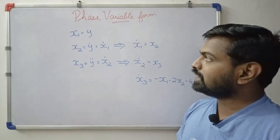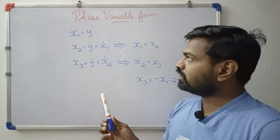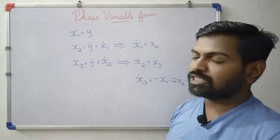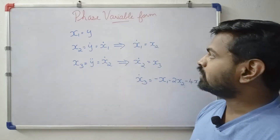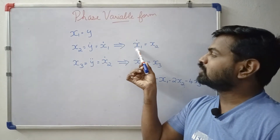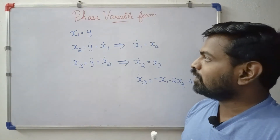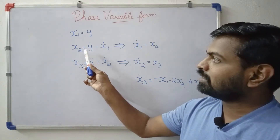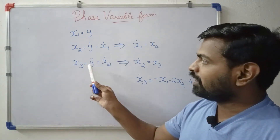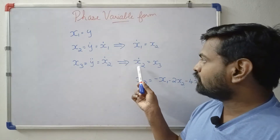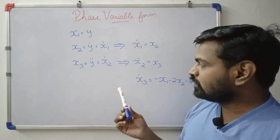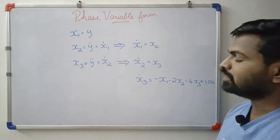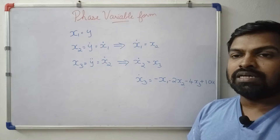x1 is equal to y, x2 is equal to y-dot, y-dot is equal to x1-dot. Therefore x1-dot is equal to x2, and x3-dot is equal to minus x1 minus 2x2 minus 4x3 plus 10u. Now we have the state equation.